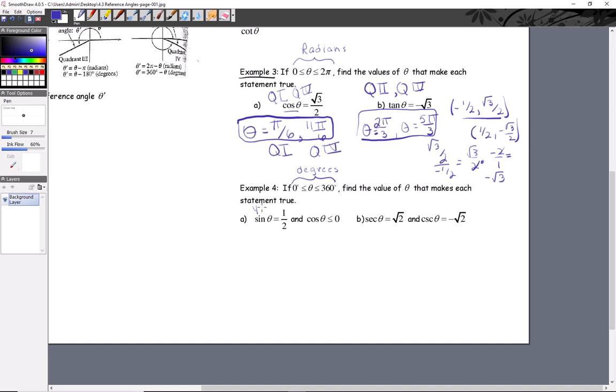Now when you get a presentation like you have in a here, they're just telling you for sine theta is one half, they're telling you that your y-coordinate is going to be positive. And then for cosine theta is less than or equal to zero, unless it actually equals zero, they're telling you that your x-coordinate is negative.